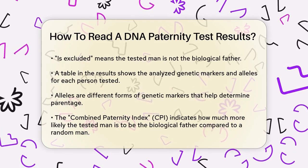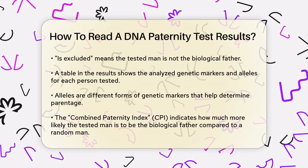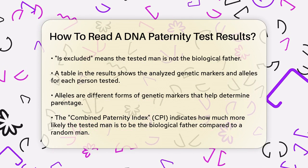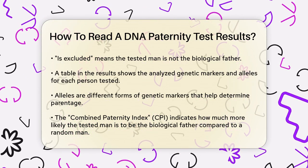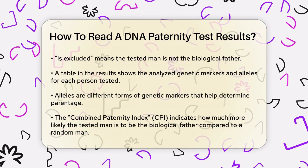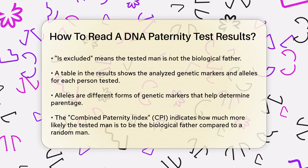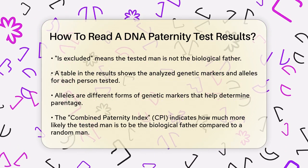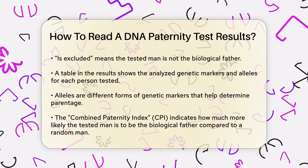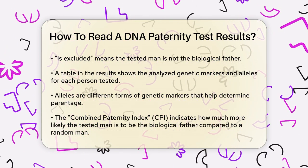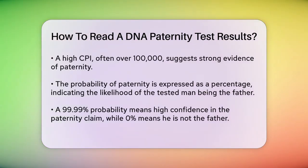Next, you'll see a table showing the genetic markers or loci that were analyzed. This table will list the alleles, which are the different forms of the genetic markers, for each person tested. For example, if the child has alleles 15 and 18 at a particular marker, and the mother has alleles 14 and 15, then the father must have contributed allele 18. If the alleged father has this allele, it supports the paternity claim.